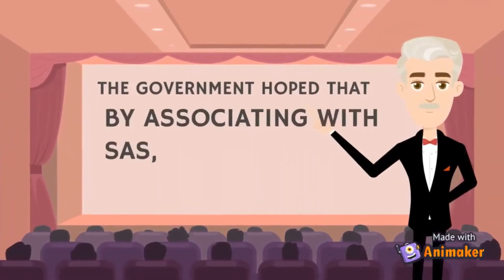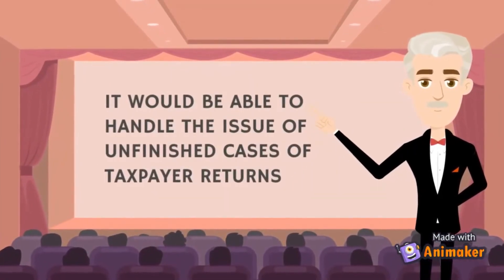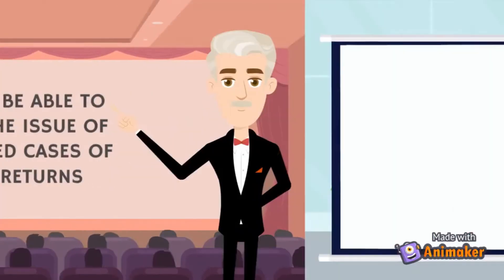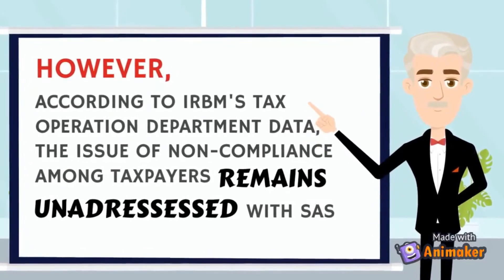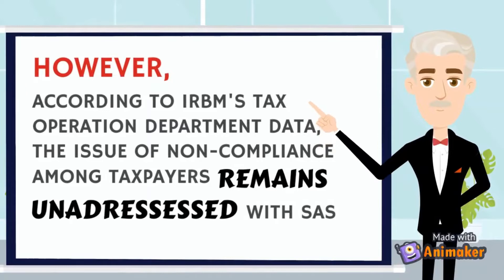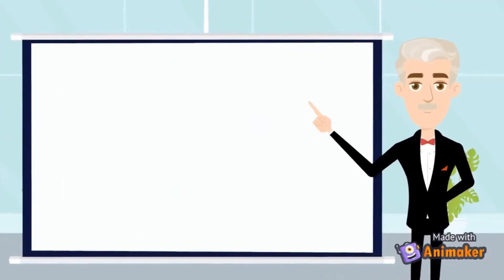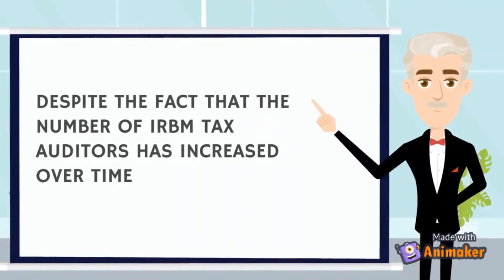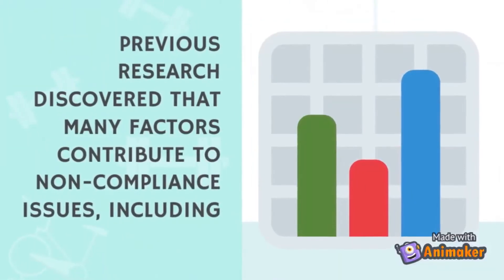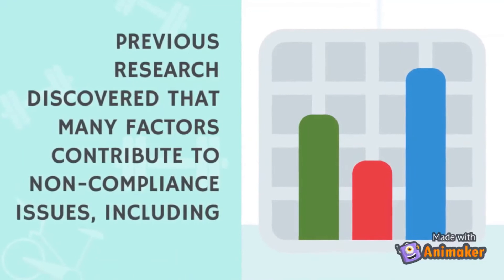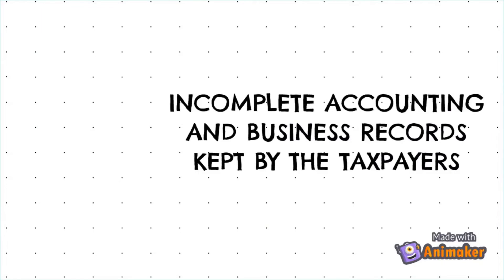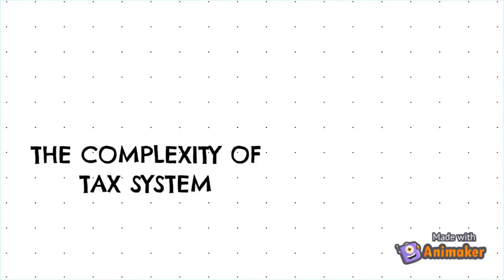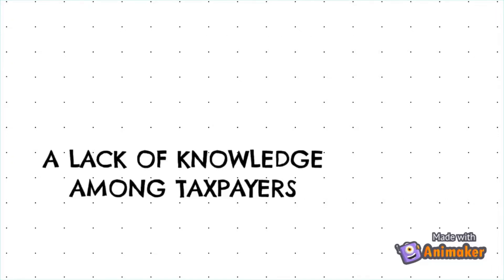The government hoped that by associating with SAS, it would handle the issue of unfinished cases of taxpayer returns. However, according to IRBM's Tax Operations Department data, the issue of noncompliance among taxpayers remains unaddressed under SAS, despite the number of IRBM tax auditors increasing over time. Previous research discovered that many factors contribute to noncompliance, including the complexity of tax laws and regulations, incomplete accounting and business records, complexity of the tax system, taxpayer behavior, inadequate financial records, and a lack of knowledge among taxpayers.